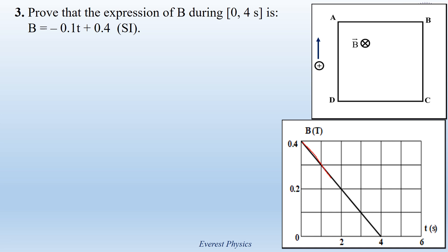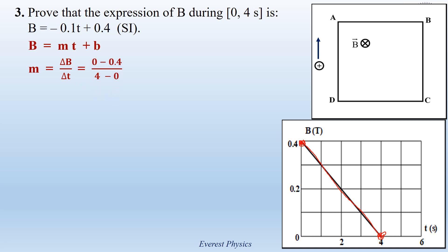Look at the second figure. B varies linearly with time. Then B has the form of MT plus small b, where small b is a constant and M is the slope of the curve. The slope is given by delta B over delta T. To determine the slope, let's take two points from the curve. The first point having an abscissa of 4 seconds and an ordinate of 0 Tesla, and the second point having an abscissa of 0 seconds and an ordinate of 0.4 Tesla. So M, which is given by B2 minus B1 over T2 minus T1, is equal to 0 minus 0.4 over 4 minus 0, which is equal to minus 0.1 Tesla per second.